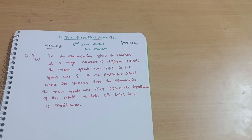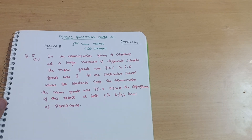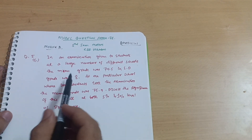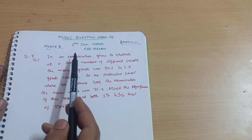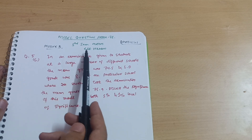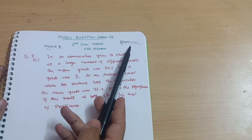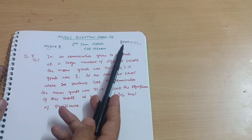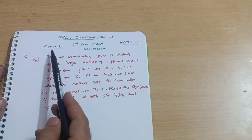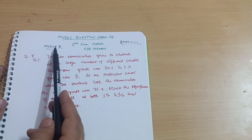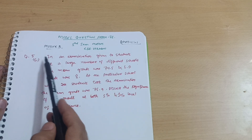Hello everyone and welcome back to my channel. Hope you are all doing well. Dear friends, we are discussing the module question paper of the mathematics subject for CSE stream students. Subject code is BMAT CS301. In this video we will discuss module third, question number 5C.